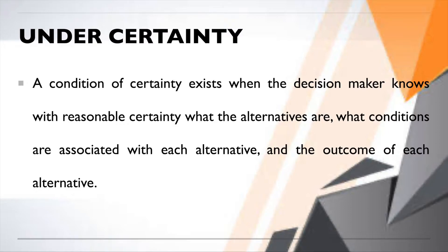The first one is under certainty. A condition of certainty exists when the decision maker knows with reasonable certainty what the alternatives are, what conditions are associated with each alternative, and the outcome of each alternative. Notice the key word: the decision maker knows.